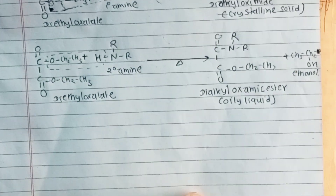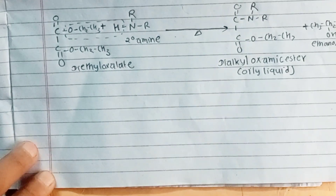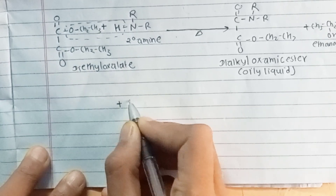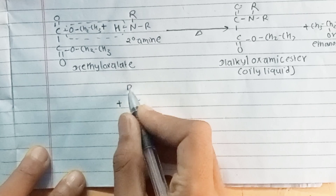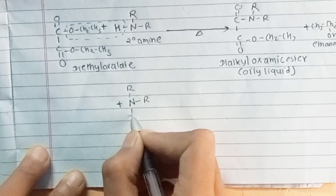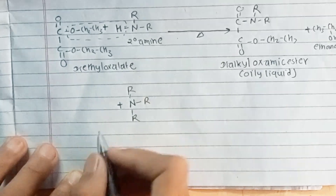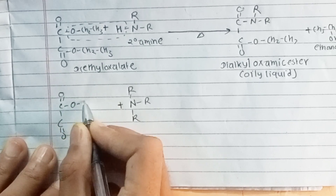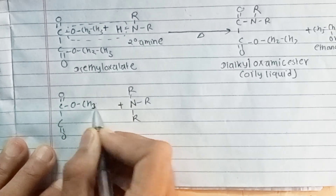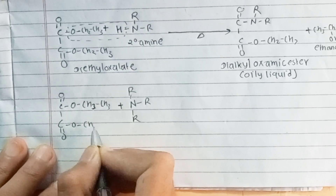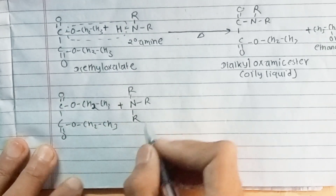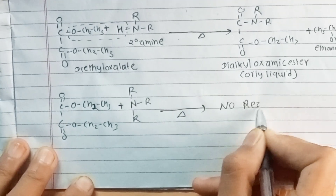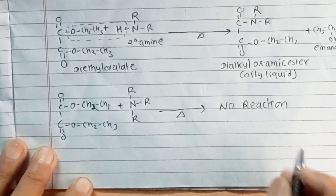For the three degree amine, there are no reactions. Why are there no reactions? The tertiary amine, N-R3, does not have any H atom available to react. Because there is no H, it cannot react with diethyl oxalate, so there is no reaction.